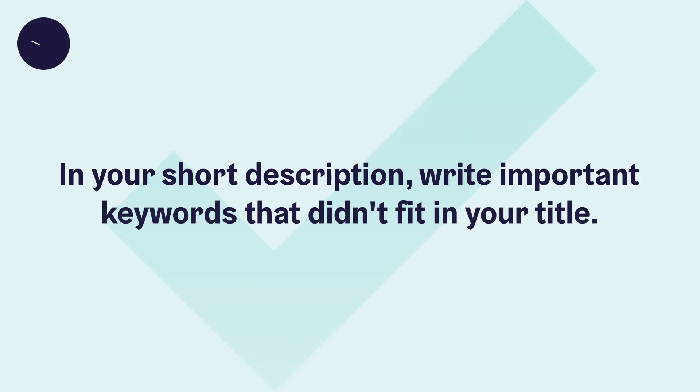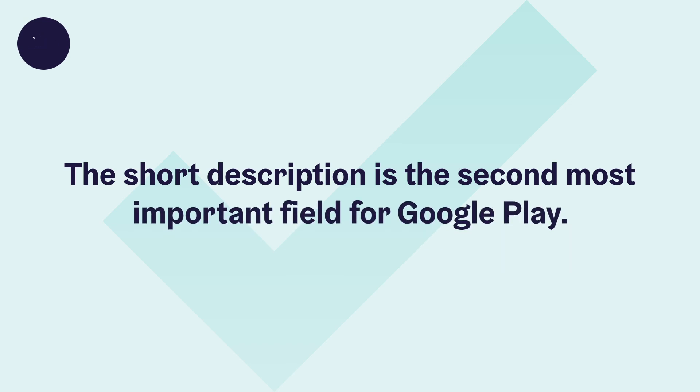You also have more space, so you should make use of it. What I would suggest for your short description is that you place keywords that are also very important but didn't fit in your app title — meaning keywords that the search volume wasn't that high, or it was a bit harder to arrange for that keyword, but they're still important for your app. This is also the second most important field for Google Play, so the relevant keywords should be there.